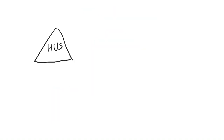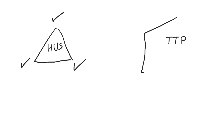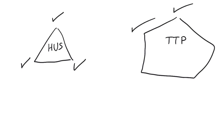Let's review from scratch. HUS is a triad: microangiopathic hemolytic anemia, thrombocytopenia, and renal failure. TTP is a pentagon — five symptoms: microangiopathic hemolytic anemia, thrombocytopenia, acute renal failure, fever, and neurological symptoms.